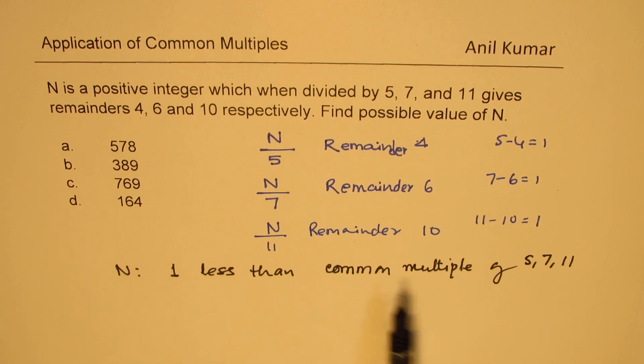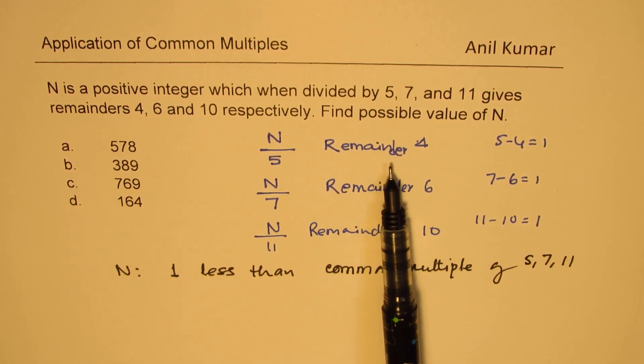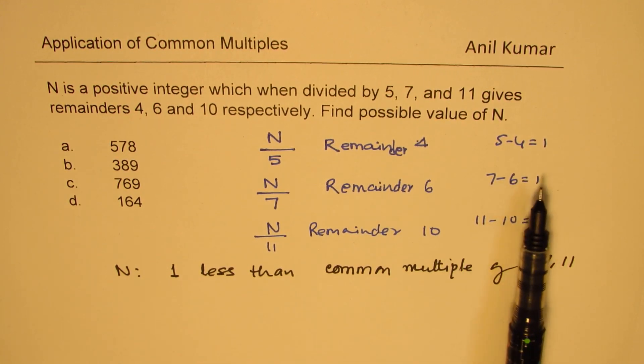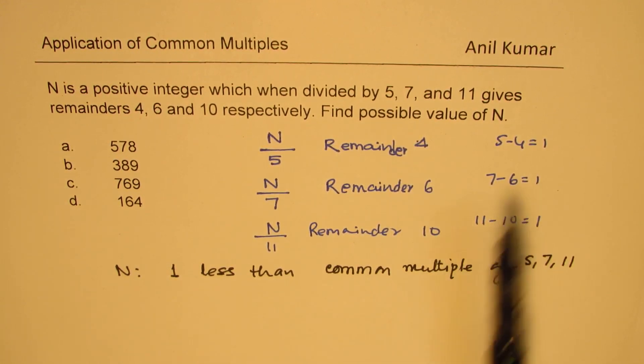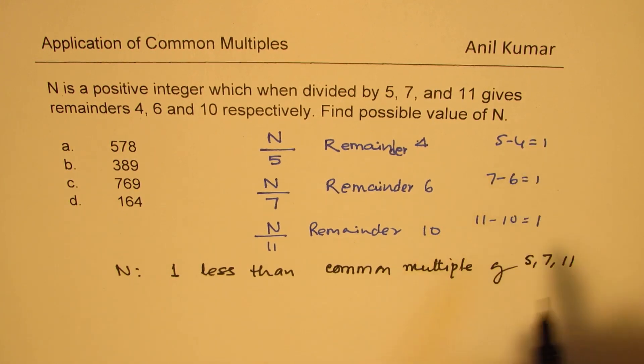So if I have a number which is a multiple of these numbers, then that will give you no remainder. However, the remainder is going to be 1 less than the divisor only when this common multiple minus 1 is the number.